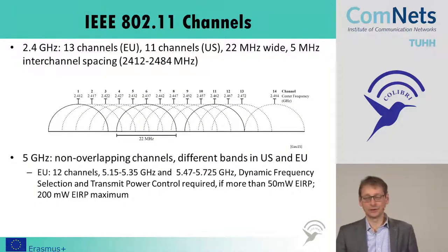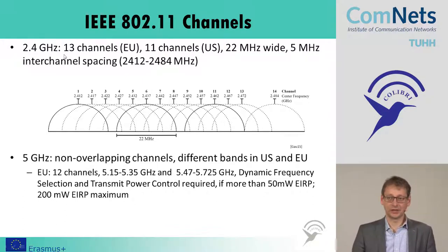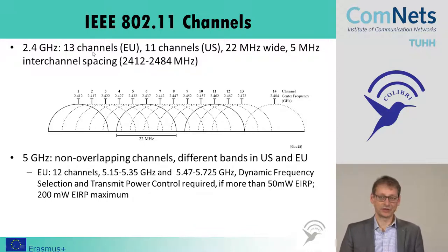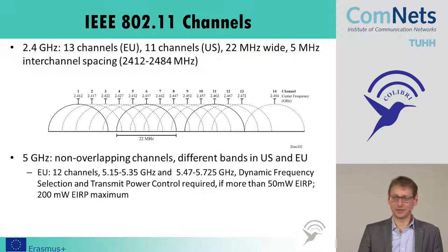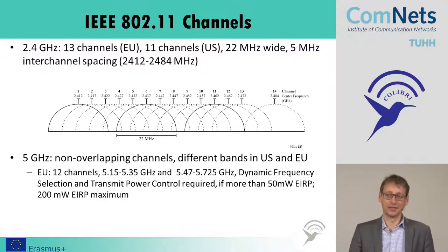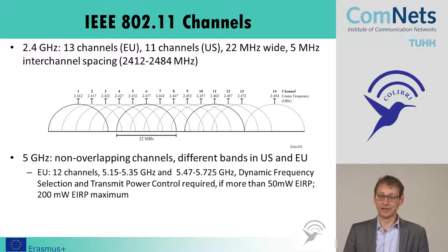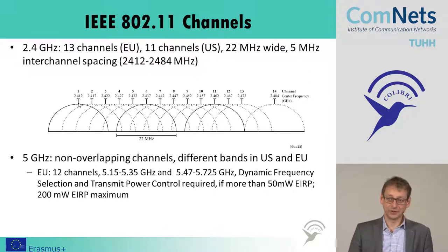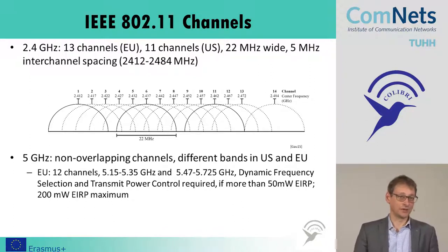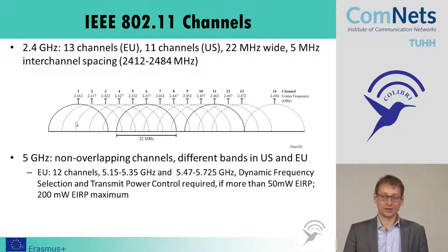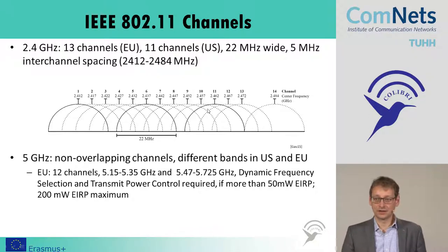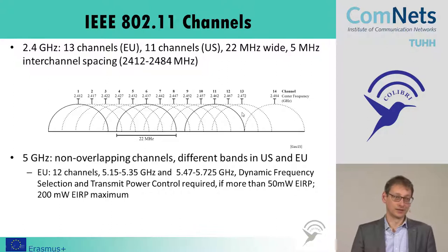Looking back at 2.4 GHz, we have 13 or 11 channels standardized depending on the region, and they are 22 MHz wide with 5 MHz inter-channel spacing. This should make us curious: 22 MHz wide channels with only 5 MHz inter-channel spacing means every 5 MHz you move to the next channel but the channel bandwidth is 22 MHz — so these channels overlap, as we see in this graph. If you set up your home network, you should not use overlapping channels because they interfere with each other. The non-overlapping channels are only 1, 6, and 11, or 1, 7, and 13; the others will interfere with each other.